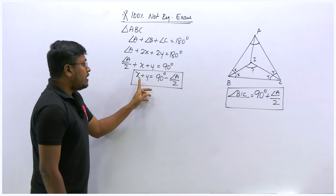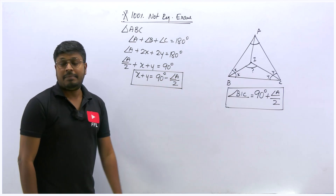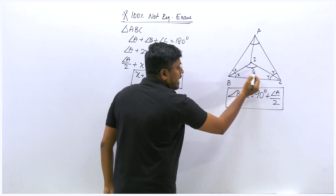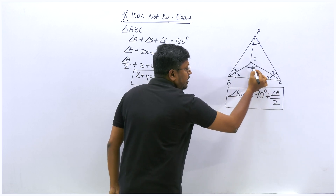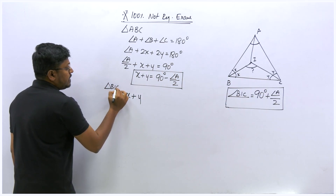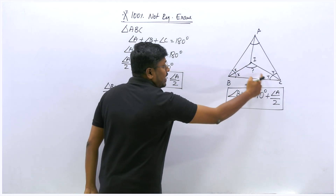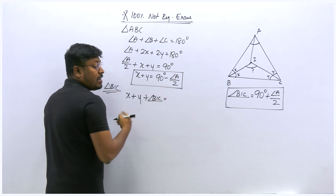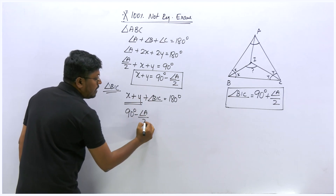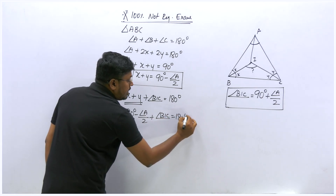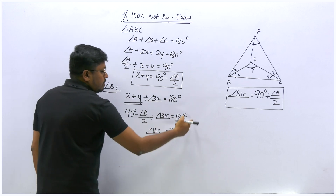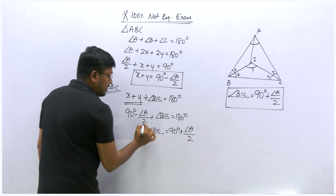Now take the smaller triangle BIC. Its three angles are x, y, and angle BIC, summing to 180°. Substituting x + y = 90° − (A/2): we get 90° − (A/2) + angle BIC = 180°. Therefore, angle BIC = 90° + (A/2). This is the final incenter formula.